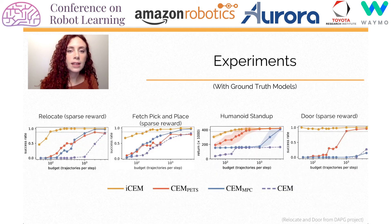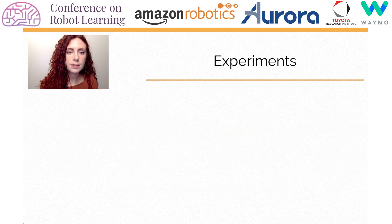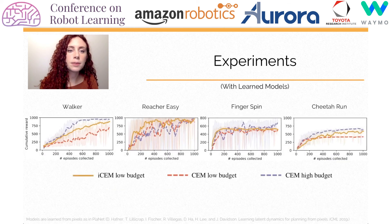On the x-axis is the number of samples per time step, and iCEM performance is in yellow. Only by increasing the budget do the other CEM baselines converge to our method. We evaluated iCEM also on models learned from pixels, and as we can see from the curves, we managed to get a performance close to a sample-extensive version of CEM, while still being able to plan in real time.